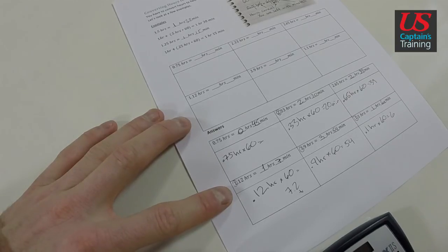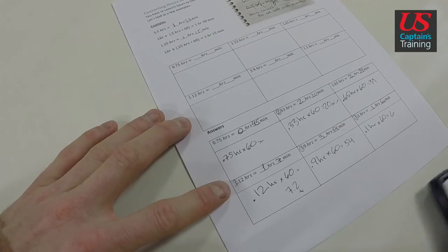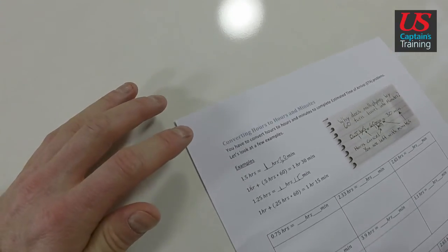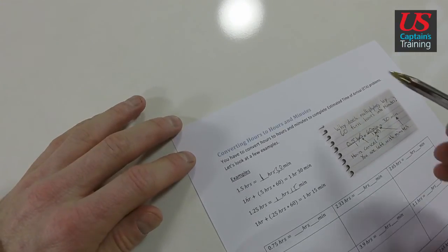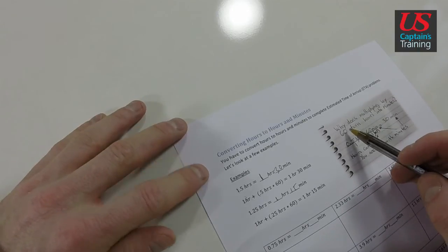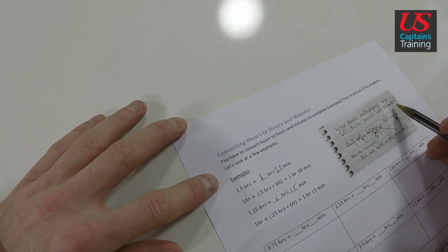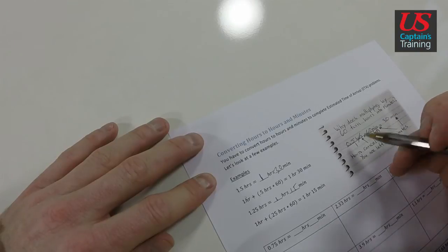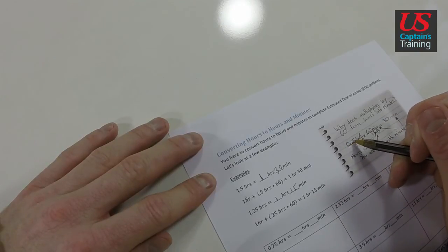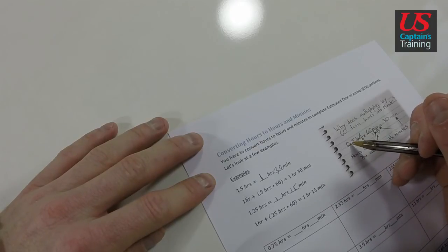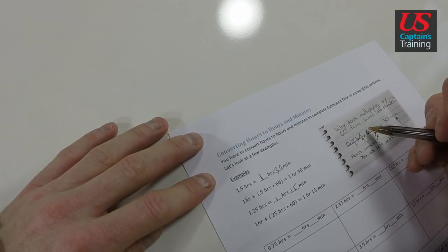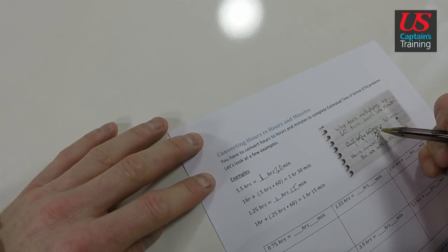One last question: Why does multiplying by 60 get you from hours to minutes? Let's look at this example up here. It says, why does multiplying by 60 turn hours to minutes? So we have this example. If we have 0.5 hours, we put it over 1 - that's the same thing, 0.5 hours - times by 60 minutes per 1 hour.